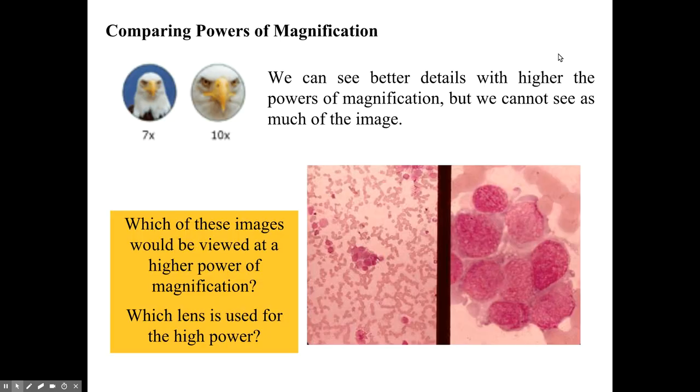Now this is important because the different powers of magnification allow us to see different things. We can see better details with higher powers of magnification but we can't see as much of the image. So if you look at the two images on the left we see most of the bird and its head versus zooming in close on its beak.